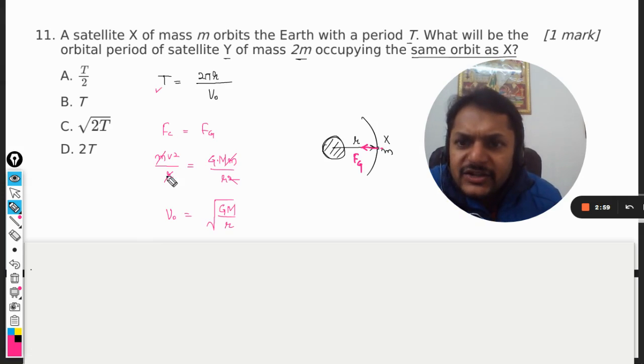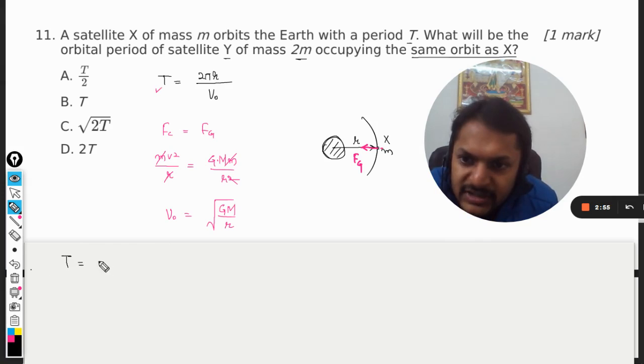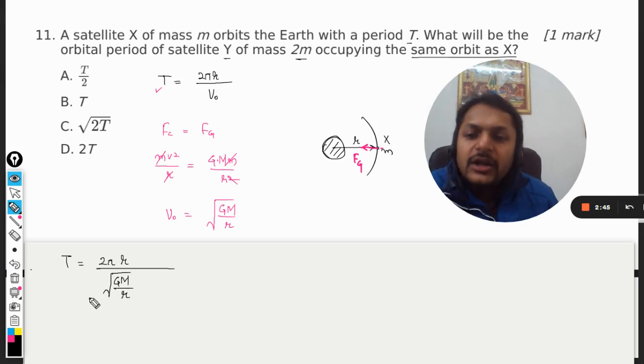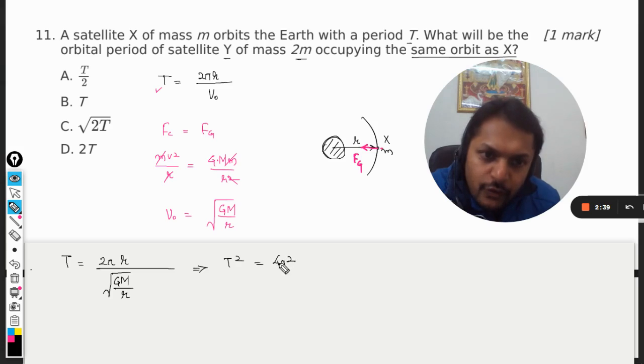Now let us write the expression for the time period T. So time period T can be taken as 2πr divided by v₀, which will be root of GM by r. Now we are going to square both sides, so it will become T² is equal to 4π²r².